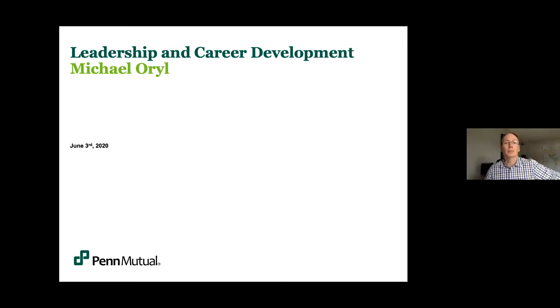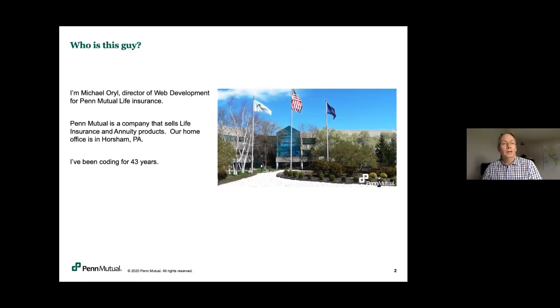Thank you very much, Chelsea. So I'm Michael Oral, the Director of Web Development for Penn Mutual. Penn Mutual is a life insurance company. In addition to life insurance policies, we sell annuities. So basically, they're both financial things based on how long somebody lives. Either we pay somebody when they die or we pay someone until they die. We work both sides of the coin. The company's 173 years old. We were founded in 1847.